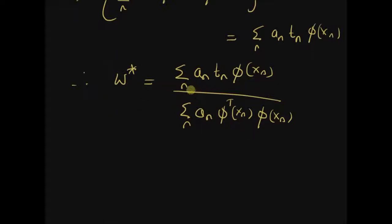Therefore, the optimal solution is basically a weighted sum of the product of the target values and the basis functions with the weights a_n, and of course divided by this scalar.